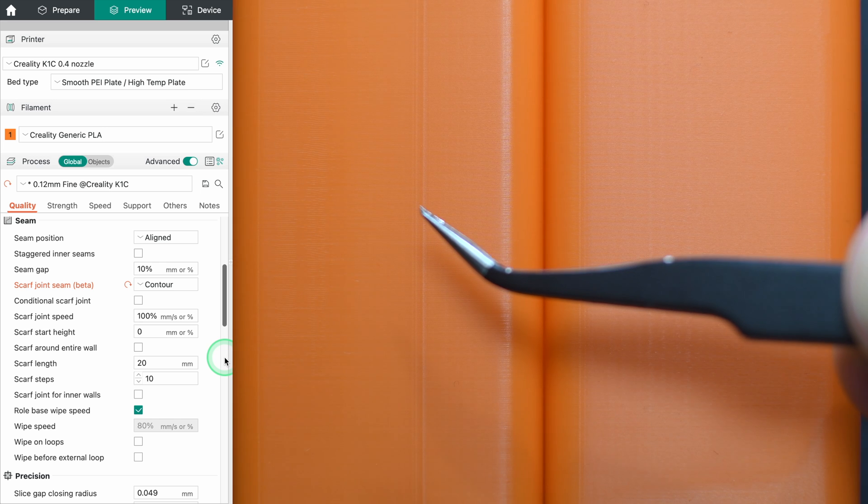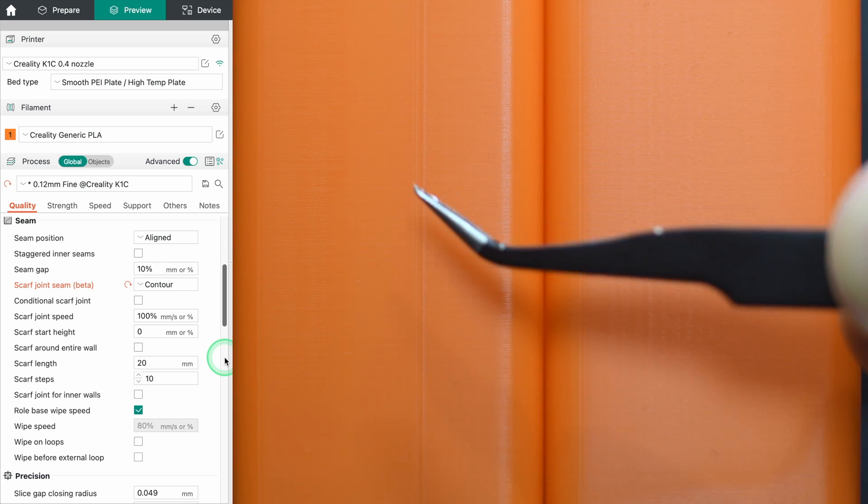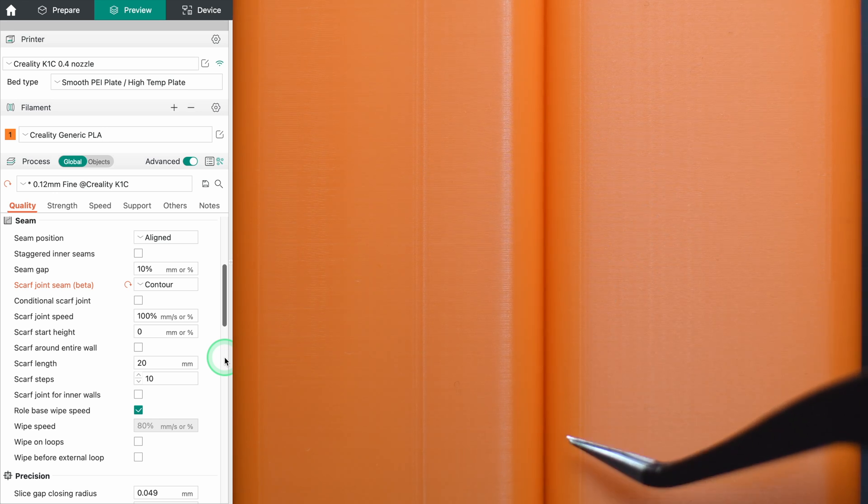The default settings for the scarf joint seam are not bad at all and definitely a big improvement on the normal seam. However we can use the settings to try to make the seam even more unnoticeable.